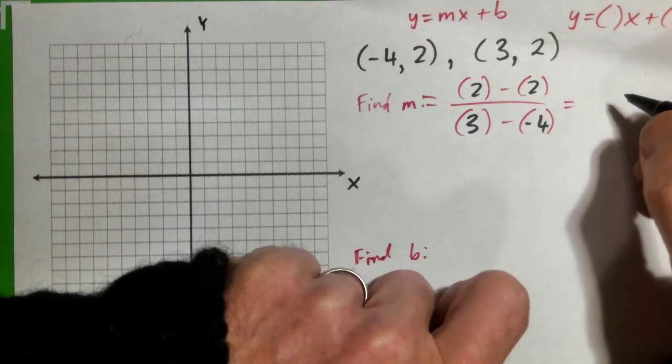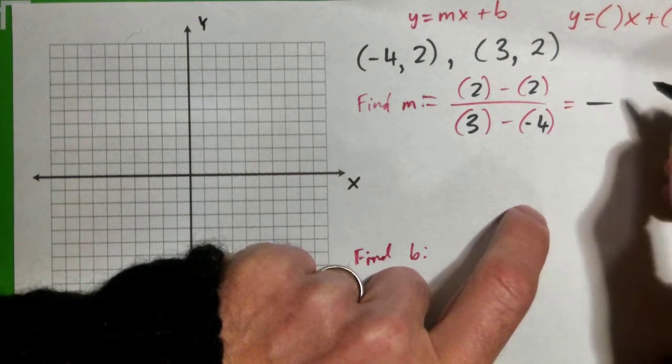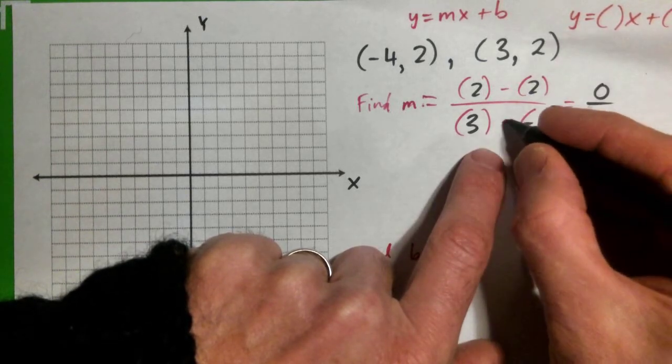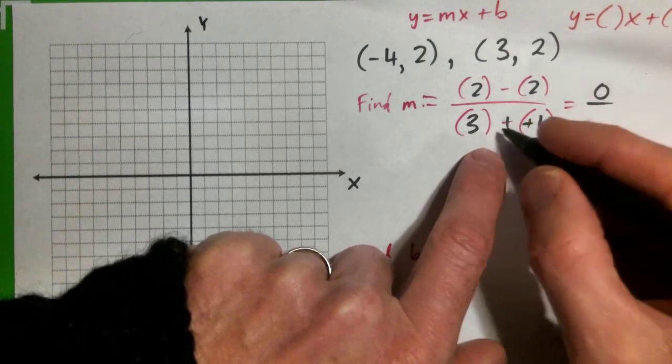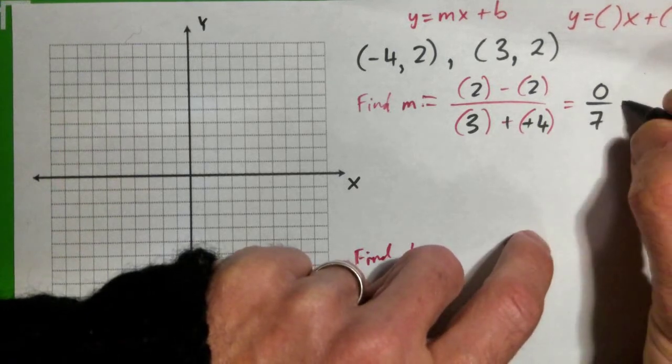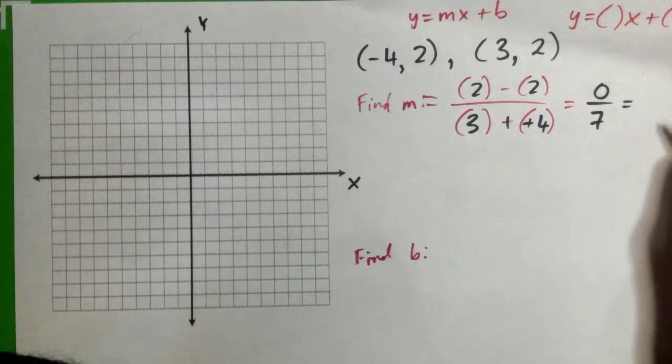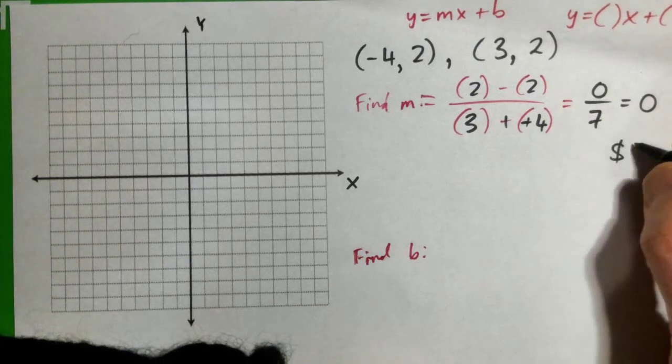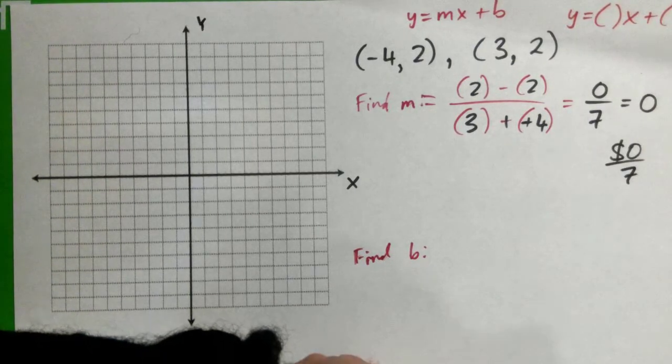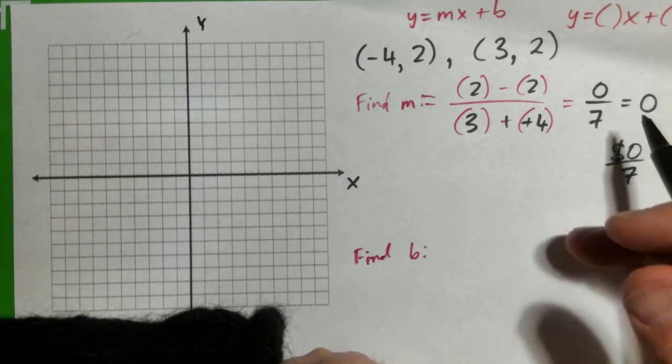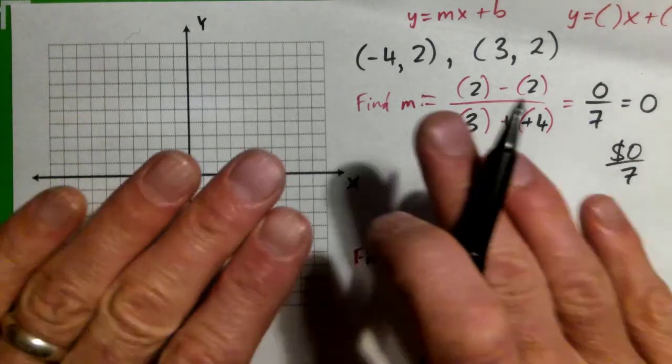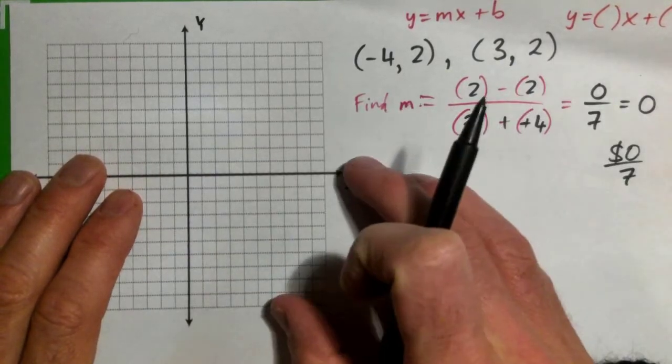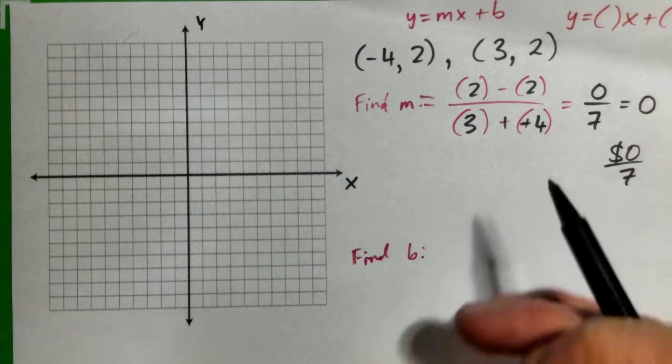And so we get 2 - 2, 0 on the top. On the bottom, 3 minus negative 4, that's negative negative, plus plus, 3 + 4 is 7. 0 over 7, and that makes 0. It's kind of like 0 dollars divided equally among 7 people - each person gets 0 dollars. So the slope is 0. That means it's a flat line, a horizontal line. If you put a ball on the table, it won't roll. There's no slope.